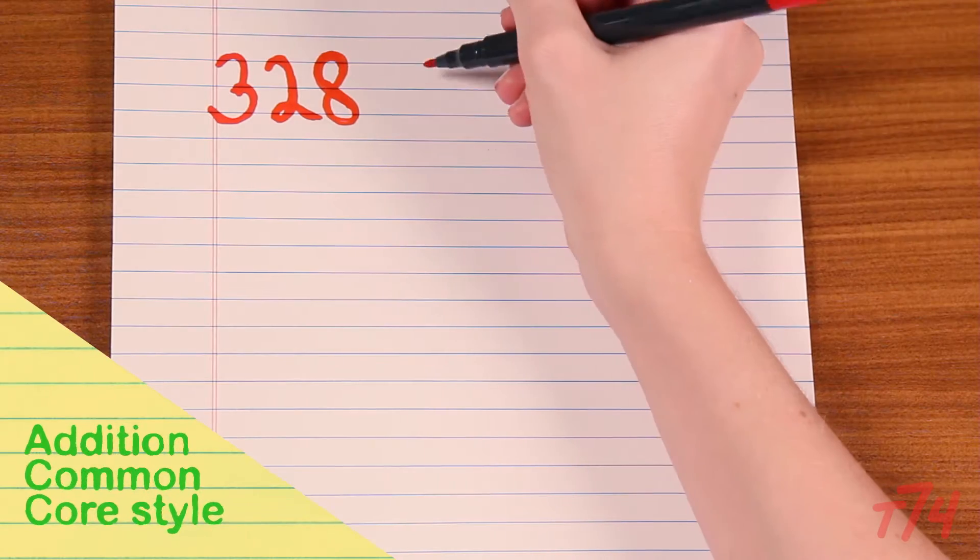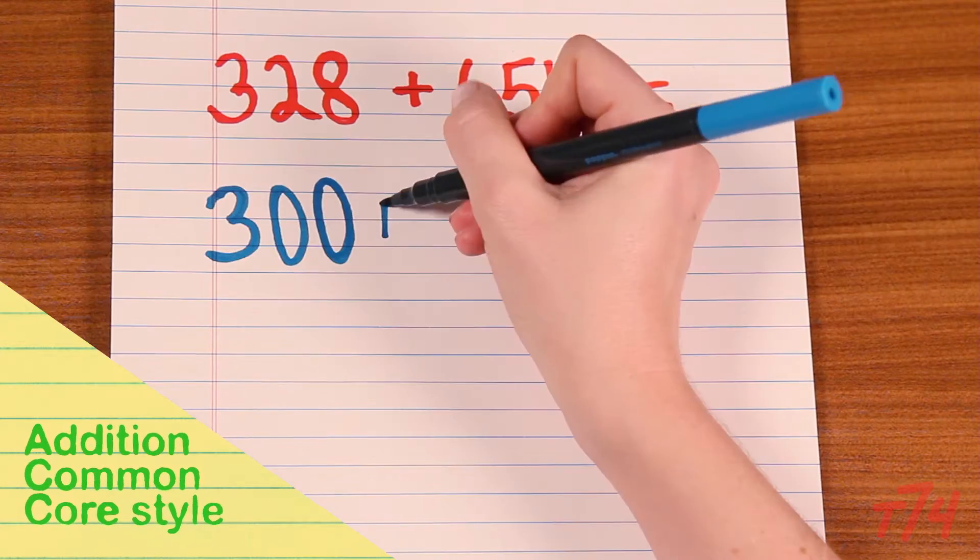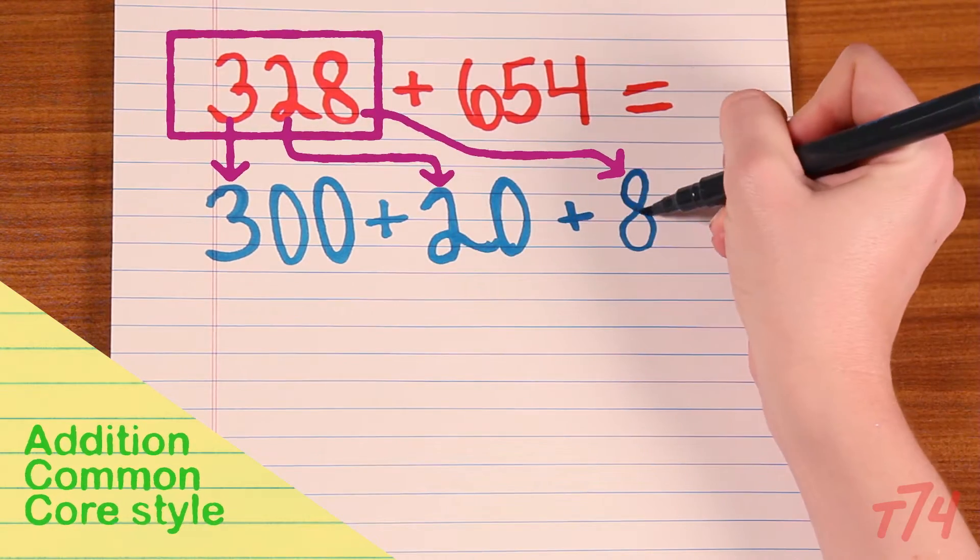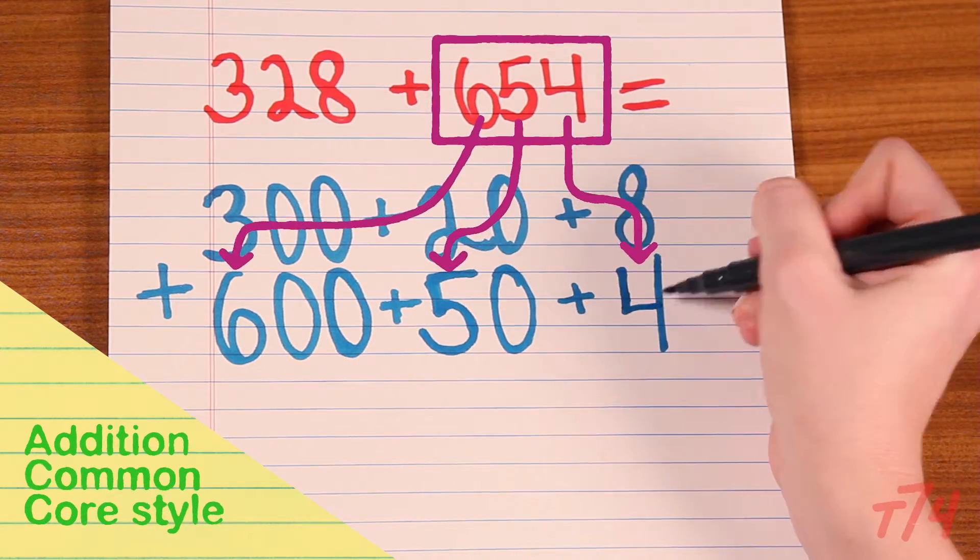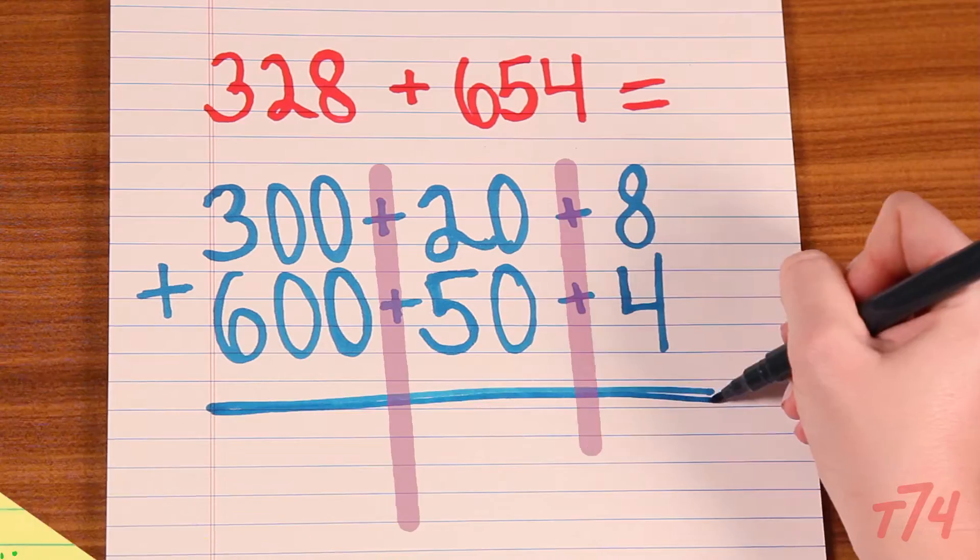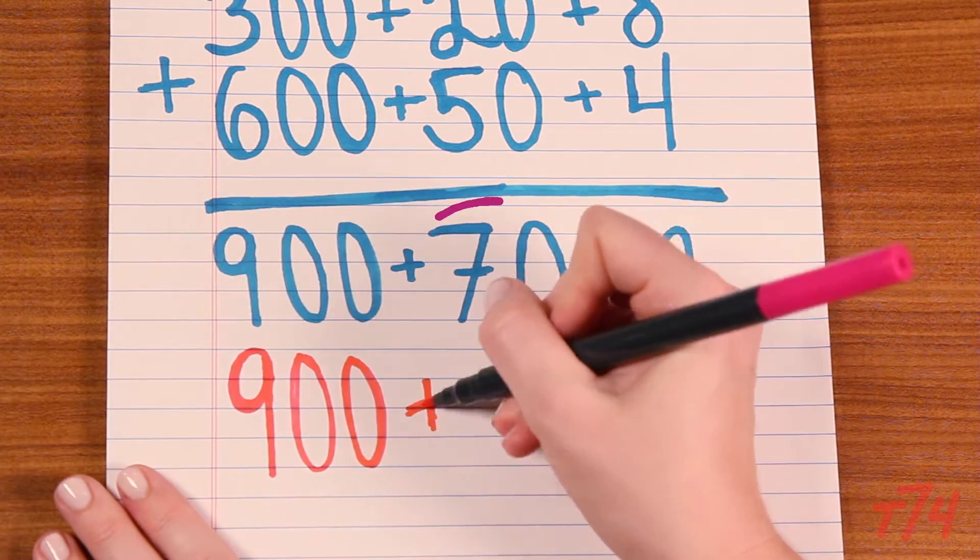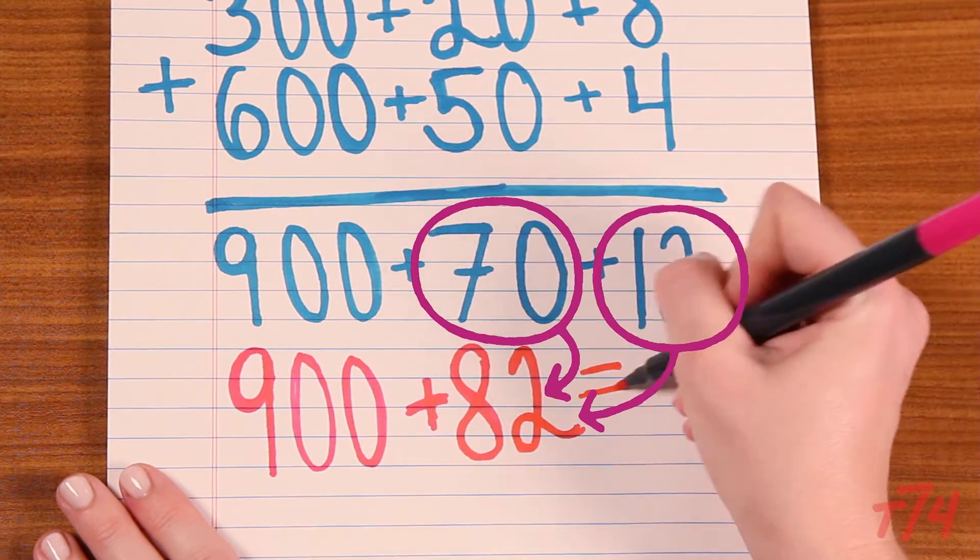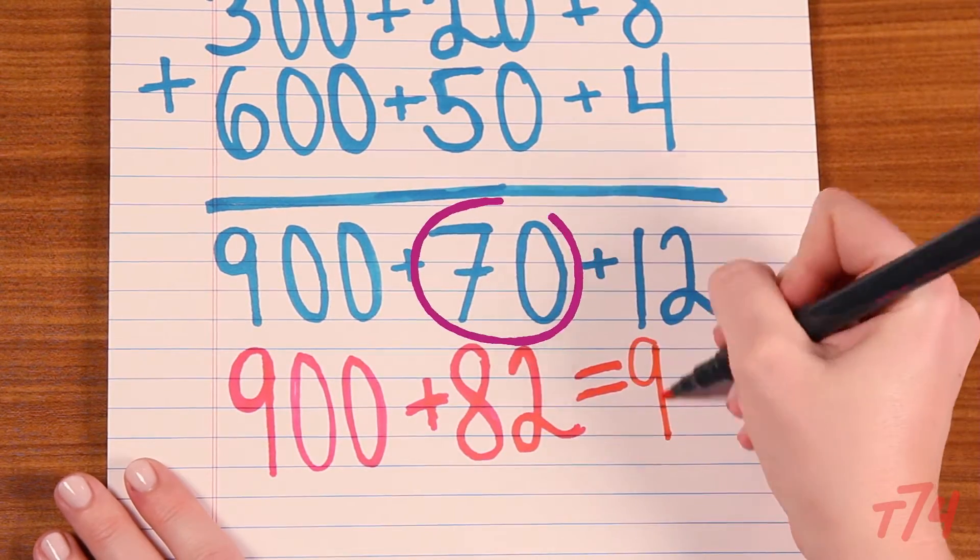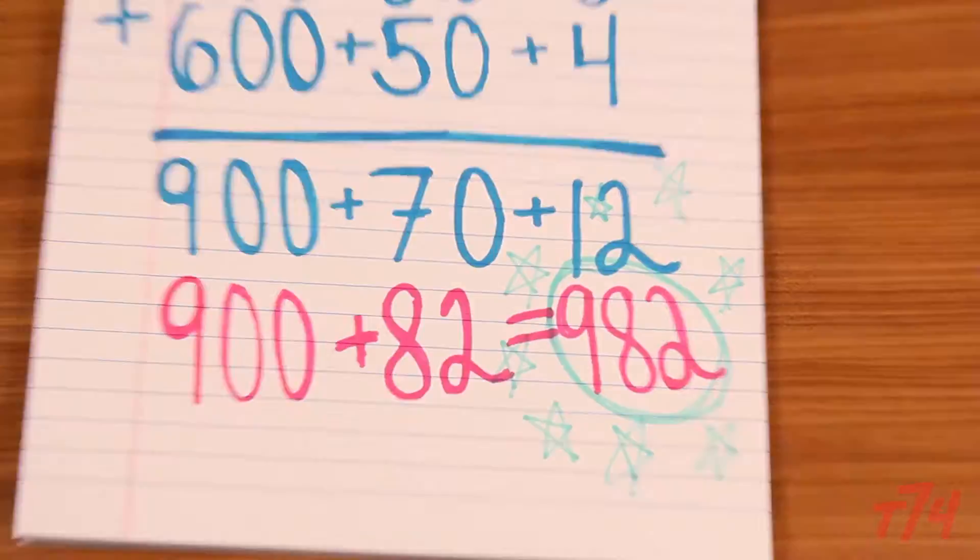So if I look at 328, I know that it's 300 plus 20 plus 8, and it would be 600 plus 50 plus 4. Then I can compose the numbers back together: 900. And then I know 70 plus 12 is 82, so I can put that with my nine hundreds and it becomes 982.